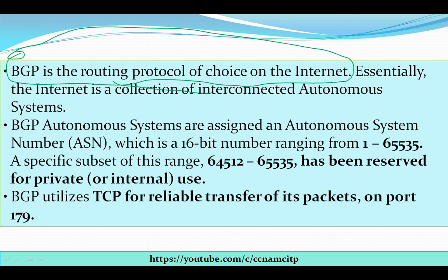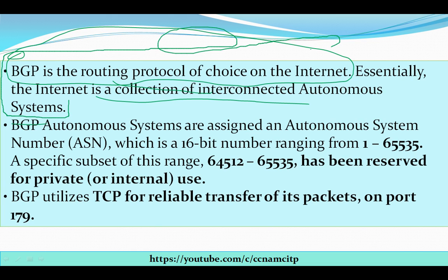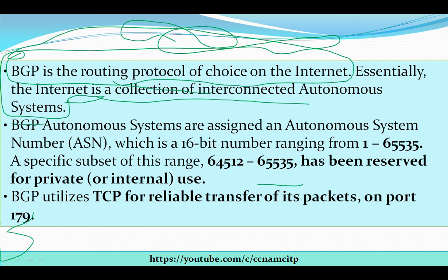Essentially, the internet is a collection of interconnected autonomous systems, because the internet is very broad compared to our local LAN or a small or medium-sized company. The internet has a very huge interconnection. BGP autonomous systems are assigned autonomous system numbers, so whenever we configure BGP we need to assign one autonomous system number, also known as ASN.